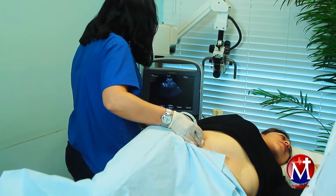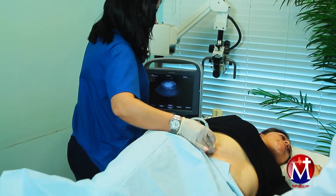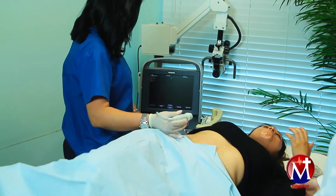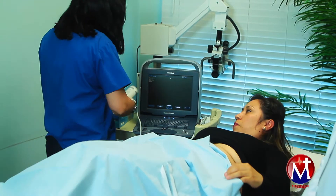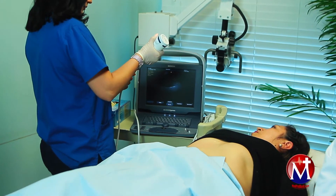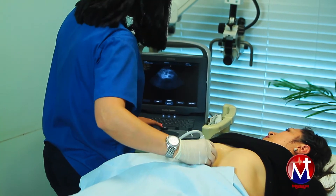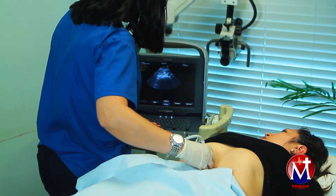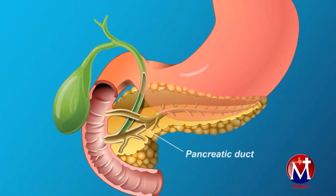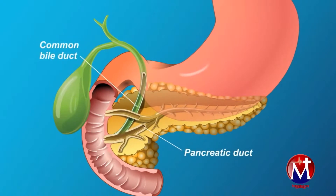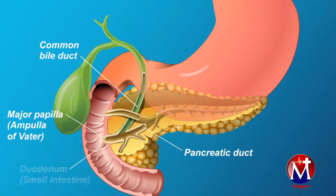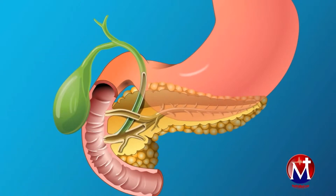While looking at the gallbladder we check the bile ducts as well and make sure they are not obstructed. Then with the patient back supine, we image the pancreas. The pancreas is a very difficult organ to assess on palpation during physical exam, and detecting diseases such as pancreatic cancer early is very important for the prognosis of that patient.